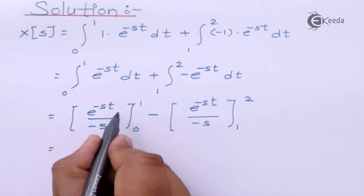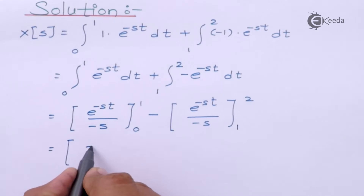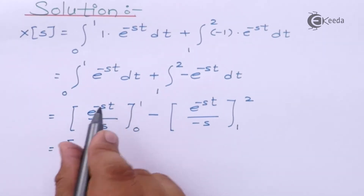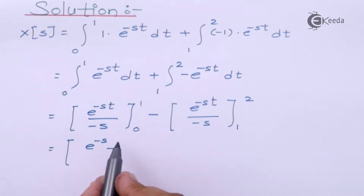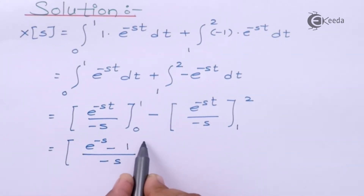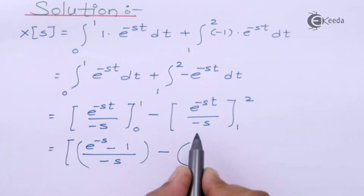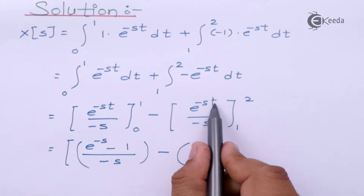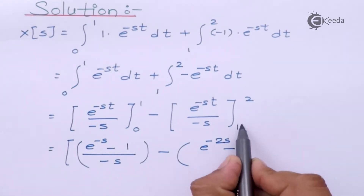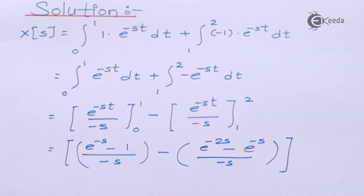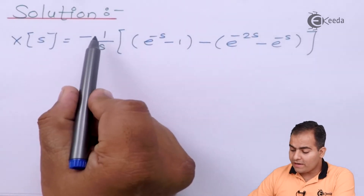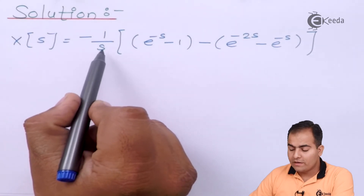Now substitute the upper and lower limits in both parts. For the first part we get E to the power minus S for the upper limit, and E to the power 0 equals 1 for the lower limit, all divided by minus S. For the second part, substituting limits gives E to the power minus 2S minus E to the power minus S, divided by minus S. I then take minus 1 over S common from both terms.